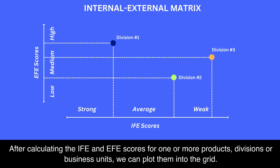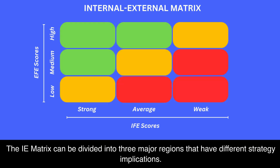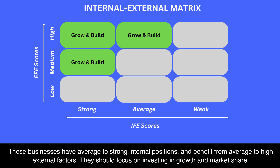After calculating the IFE and EFE scores for one or more products, divisions, or business units, we can plot them into the grid. The IE matrix can be divided into three major regions that have different strategy implications. Region one is composed of the three cells in the upper left quadrant of the matrix. They are considered to be attractive businesses that the company should grow and build. These businesses have average to strong internal positions and benefit from average to high external factors.